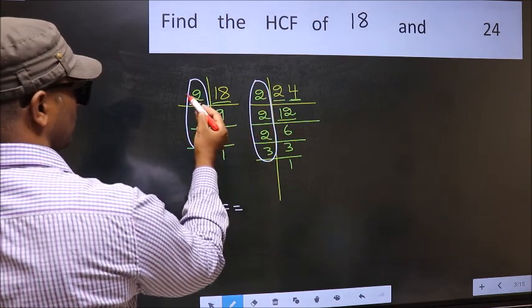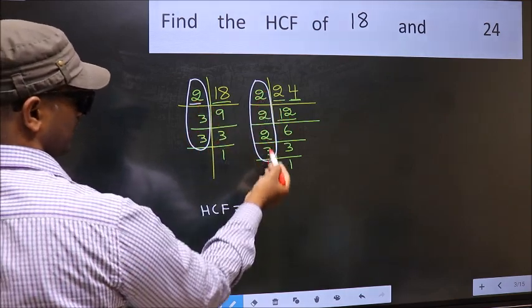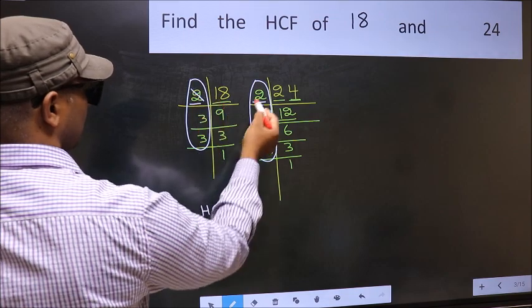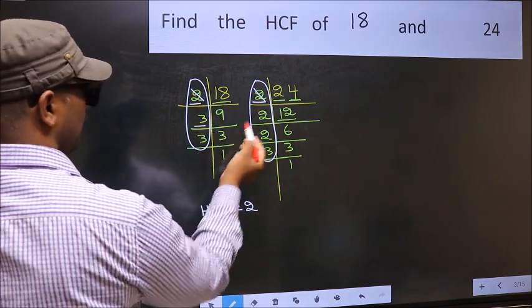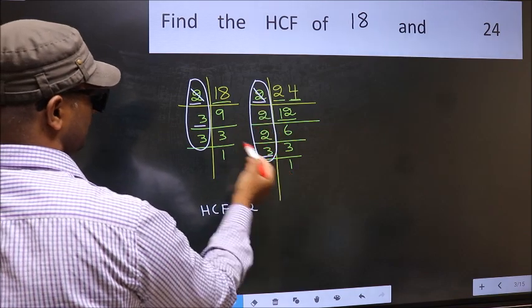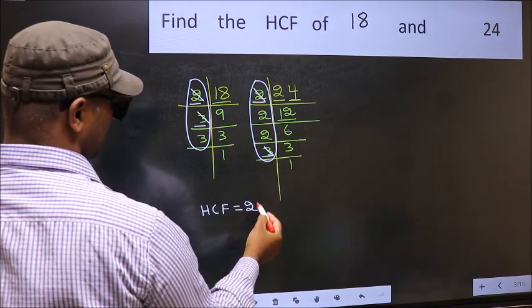Starting with the number 2. Do we have 2 here? Yes. So cut 2 right here. Next number 3. Do we have 3 here? Yes. So cut 3 right here.